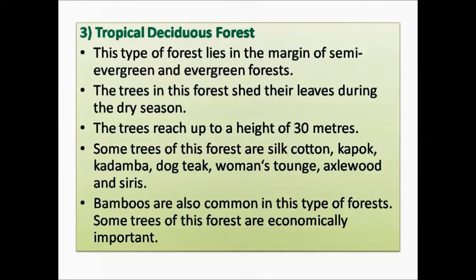The third type is the tropical deciduous forest, called Ilayudhir Kadagal in Tamil. This forest lies at the border of semi-evergreen and tropical evergreen forests. The trees shed their leaves during the dry summer season and grow up to a maximum height of 30 meters. Some trees of this forest are silk cotton (kapok), Kadamba, dog tick, woman's tongue, axle wood, and seris. Bamboos are also common in this forest type.